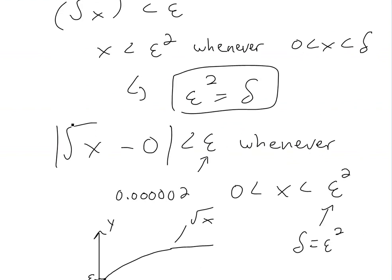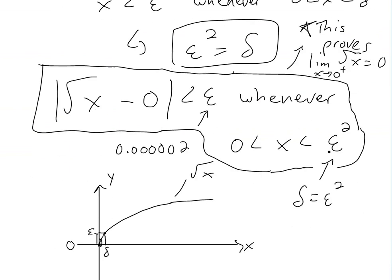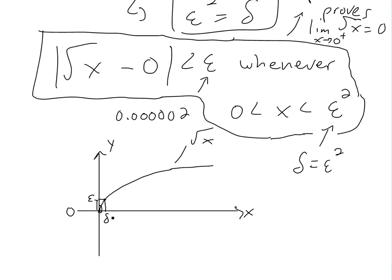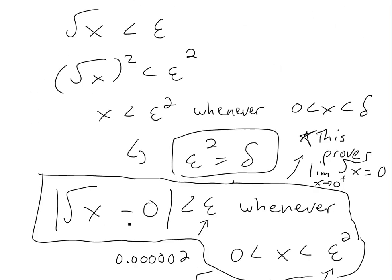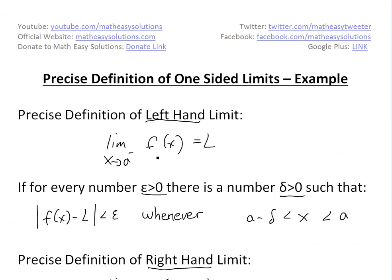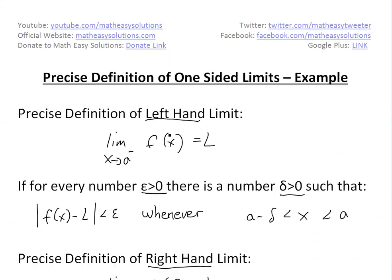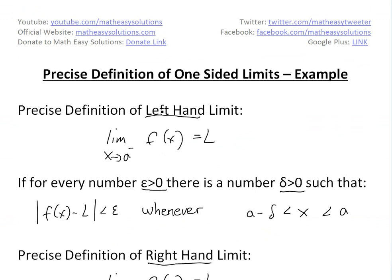So, this is our proof. This proves that the limit as x approaches zero from the right side of square root of x is equal to zero, as you can see from the graph. All we had to do was find delta, and it's epsilon squared. That's all for today — I hope you learned from this quick example. You can download these notes from the Dropbox link below. Stay tuned for another math easy solution.